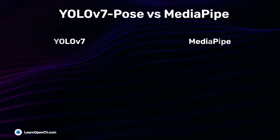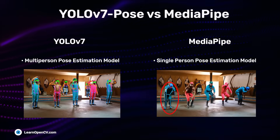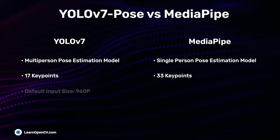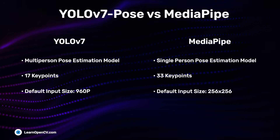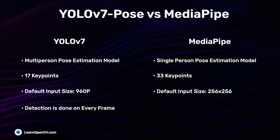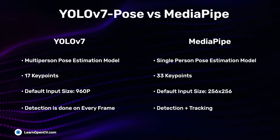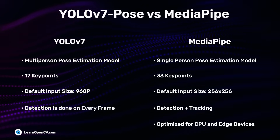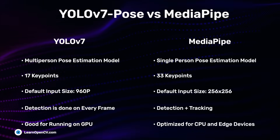YOLO V7 Pose is a multi-person pose estimation model, whereas MediaPipe is for single-person only. YOLO V7 has 17 keypoints compared to 33 for MediaPipe. The default input size for YOLO V7 is 960p versus 256×256 for MediaPipe. YOLO V7 performs detection on every frame, while MediaPipe uses a detection-plus-tracking approach to increase speed and provide more stable, reduced-jitter output. MediaPipe is also optimized for CPU and edge devices.